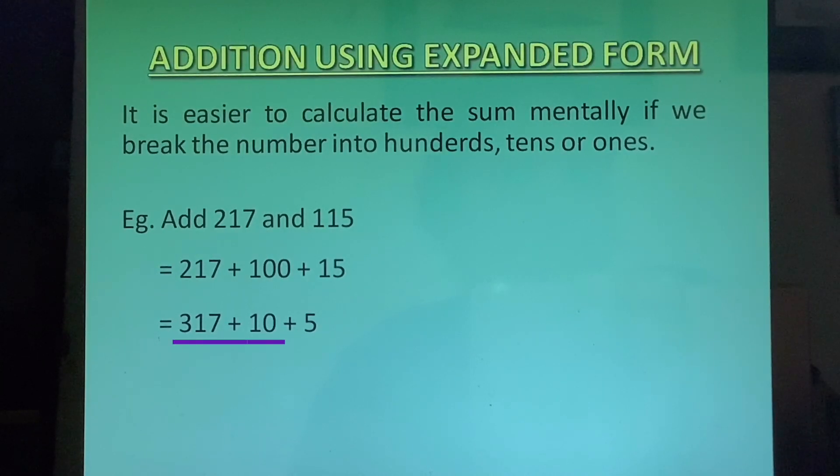Now we will add 317 and 10. We will get 327 plus 5. Now when we add this we get 332 which is our answer. So this is how you will do a sum where you have to do addition using expanded form.